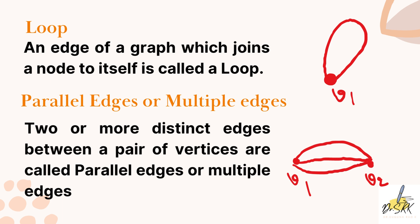What are parallel edges or multiple edges? Two or more different — that is, distinct — edges between a pair of vertices are called parallel edges or multiple edges. Looking at the second diagram, V1 and V2 are the two vertices, and between these two vertices there are three different edges. That is why these edges are known as parallel edges or multiple edges.